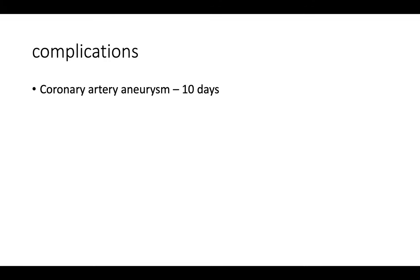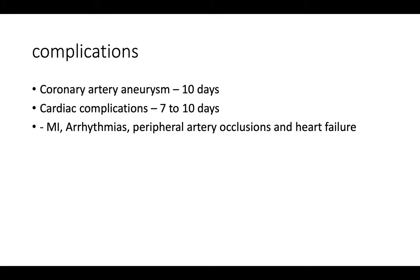Moving on to complications. As mentioned, Kawasaki disease is the leading cause of heart disease in children. Patients often develop coronary artery aneurysms around 10 days after the onset of illness. Other cardiac complications can occur slightly earlier and include MIs, arrhythmias, peripheral artery occlusions, and heart failure. This is why it's really important to perform those baseline ECHOs and ECGs. It's also important to note that 25% of untreated patients develop some form of cardiac complication.